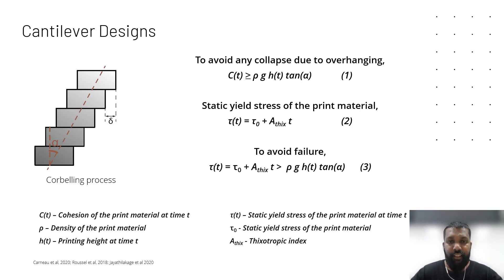The static yield stress of the material increases with time as in equation 2. Once deposited on the ground, the concrete will start gaining yield stress, but with overhanging at each layer, the cohesion should also satisfy ρ g h(t) tan(α). To avoid failure, we can summarize this as in equation 3.